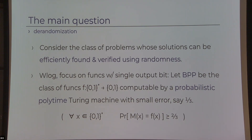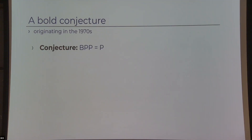We define the class BPP — Bounded error Probabilistic Polynomial time — to be the class of Boolean functions from strings to a single bit that can be solved by a probabilistic polynomial-time Turing machine with some small error. The conjecture, originating in the 1970s, is that this class actually equals P. Every problem you can solve efficiently using randomness, you can do so without randomness at all.